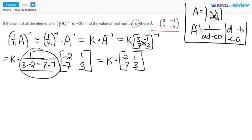So now we know that A inverse here is equal to negative 2, 1, negative 7, 3. That's what we found out here. And so we have k times negative 2, 1, negative 7, 3.